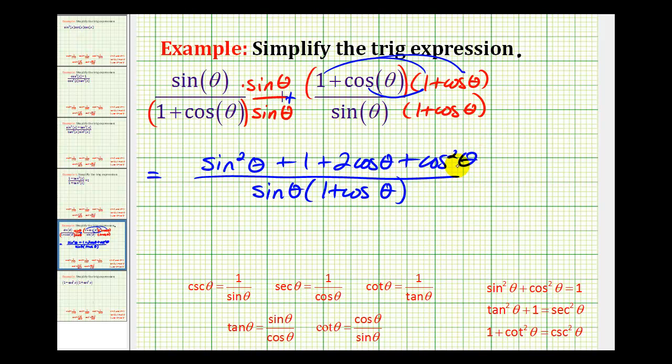Now hopefully things will start to simplify here. Now that some of the trig functions are squared, notice sine squared theta plus cosine squared theta is equal to one. And here we have sine squared theta plus cosine theta, so that's one.